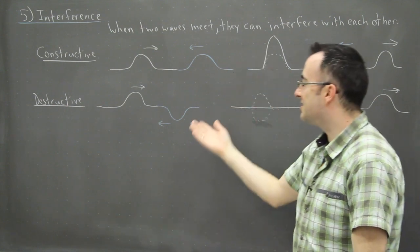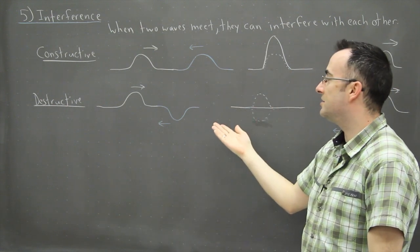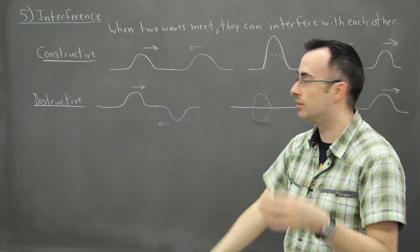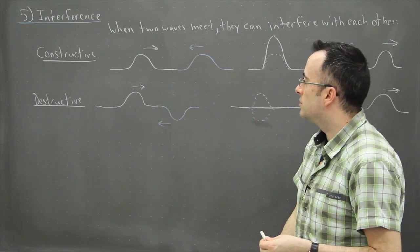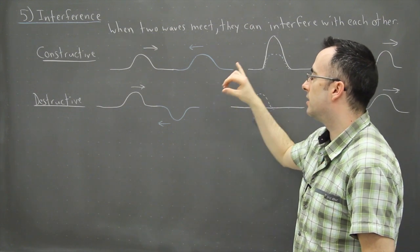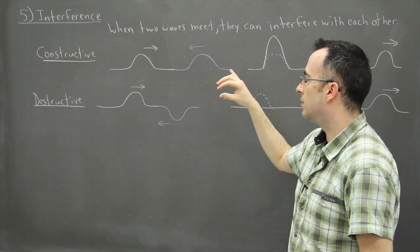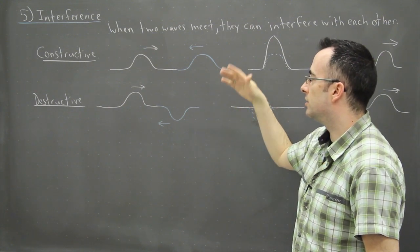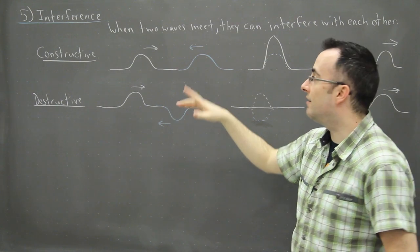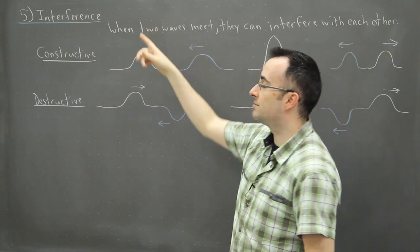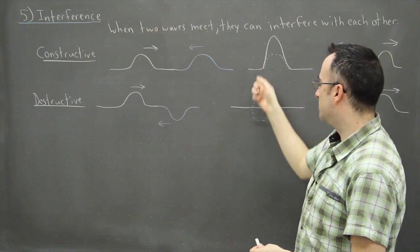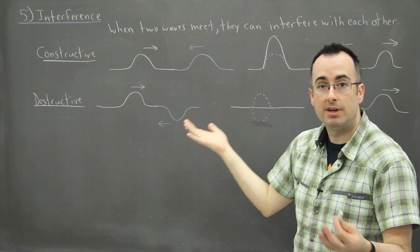I don't want you to think that these are the only two situations — you can have any combination of the two. The key thing is to think about whether they're constructing or destructing, so to speak. But when you have interference, it just means add up all the different points and see what you get.